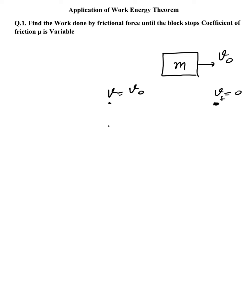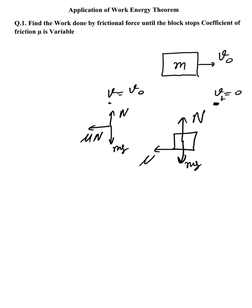Now if you make the free body diagram of that block, the frictional force is mu into N. Here N is the normal force and mg is the weight. So the frictional force f equals mu into N, which means mu into mg. This is equal to mu mg.